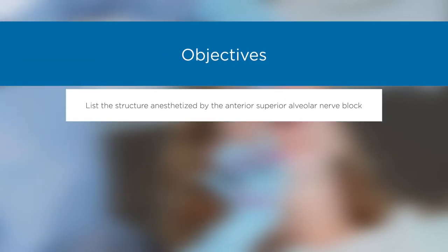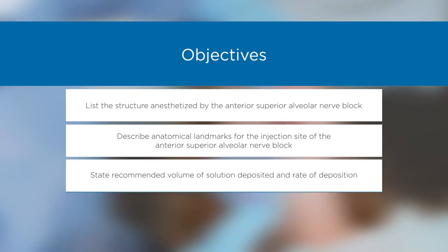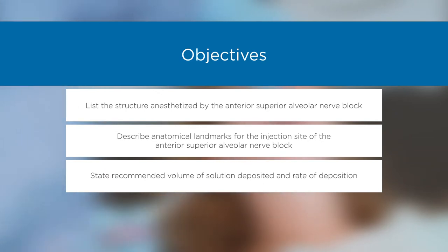Objectives: List the structures anesthetized by the anterior superior alveolar nerve block. Describe anatomical landmarks for the injection site of the anterior superior alveolar nerve block. State the recommended volume of solution deposited and rate of deposition.